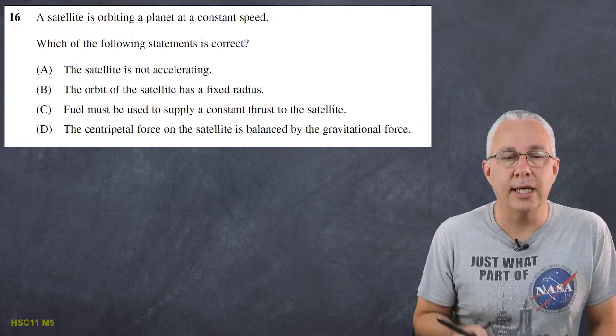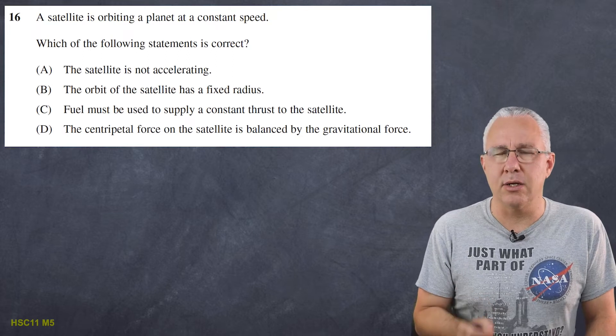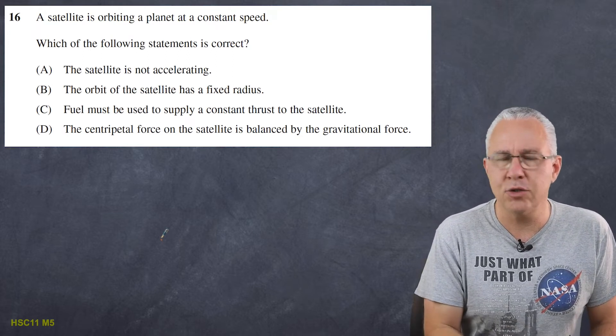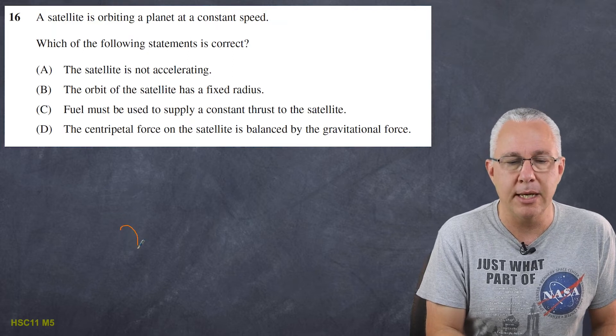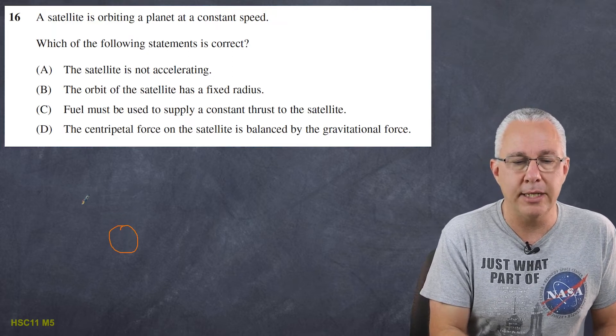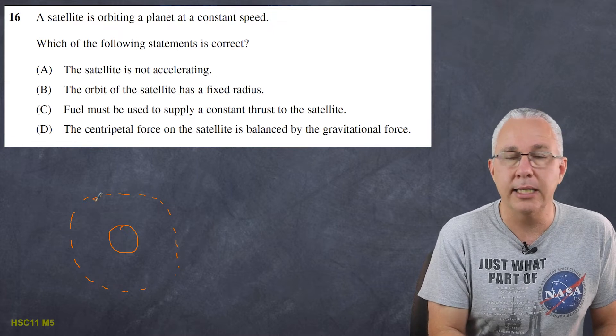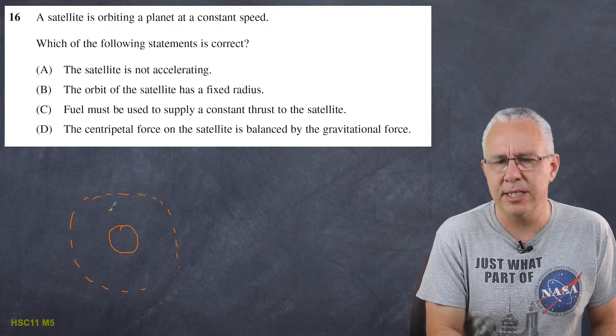Question number 16. A satellite is orbiting a planet at a constant speed. Which of the following statements is correct. Now let's just talk about this what this means. So here's my planet and here is my lovely satellite going in an orbit and it's going to be a circle. Now what else can happen? Well let me just quickly draw the alternative.